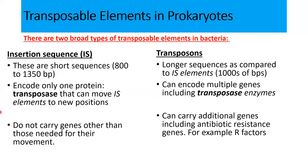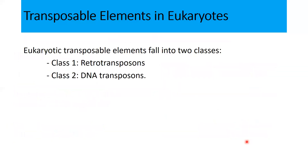Transposase is responsible for movement of genes, while other genes in transposons can be involved in antibiotic resistance — for example, R factors. In eukaryotes, there are two major classes of transposable elements: retrotransposons and DNA transposons. We shall discuss these two types of transposable elements in eukaryotes in our next lecture.